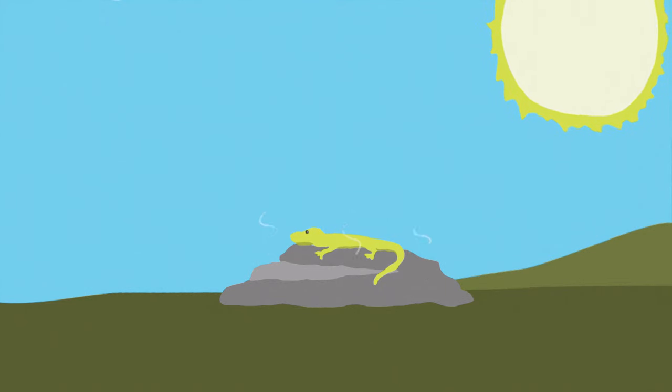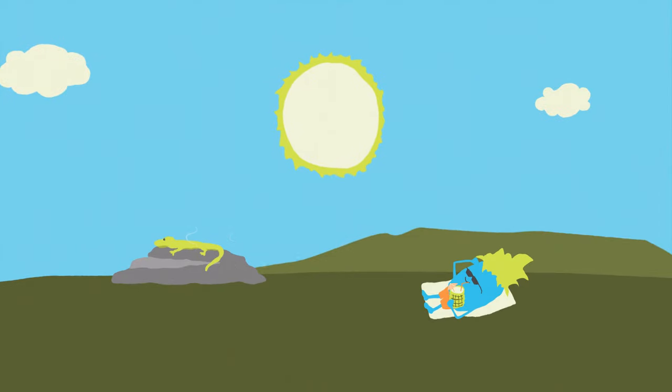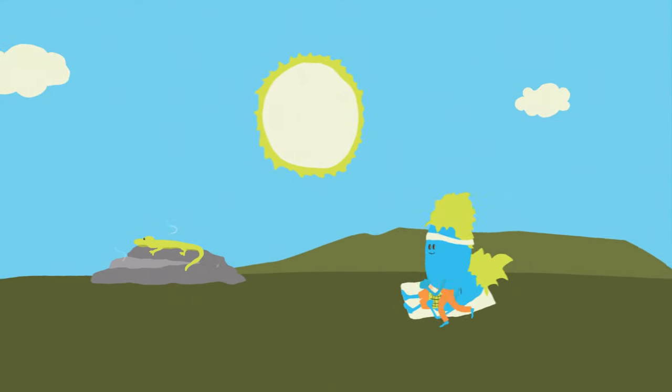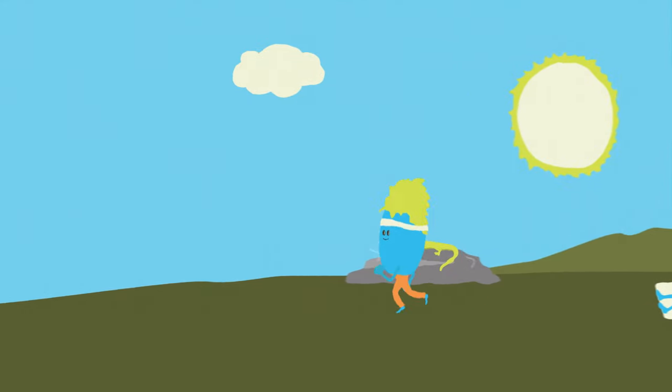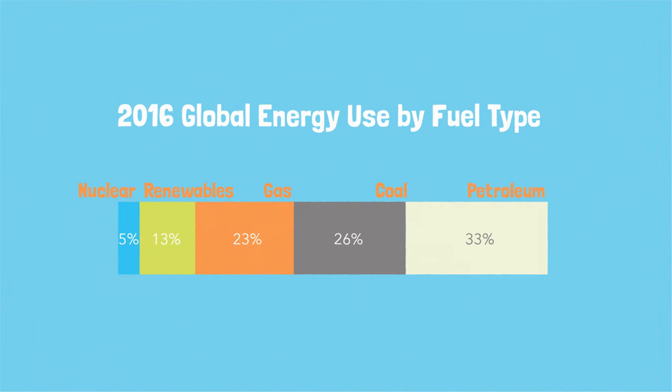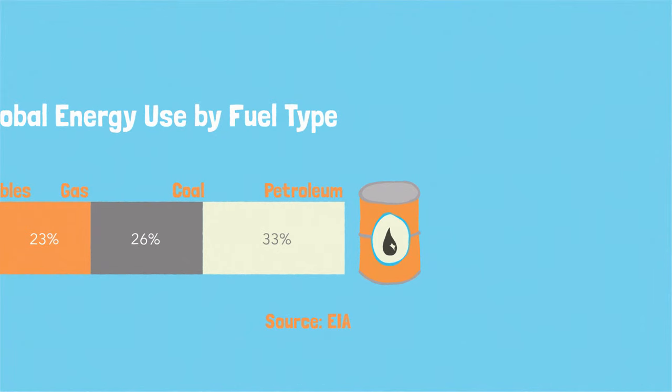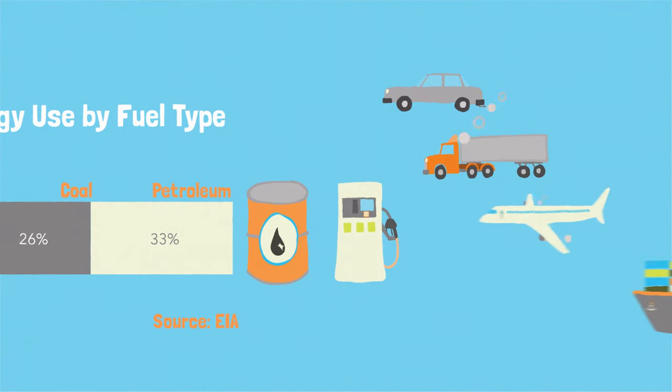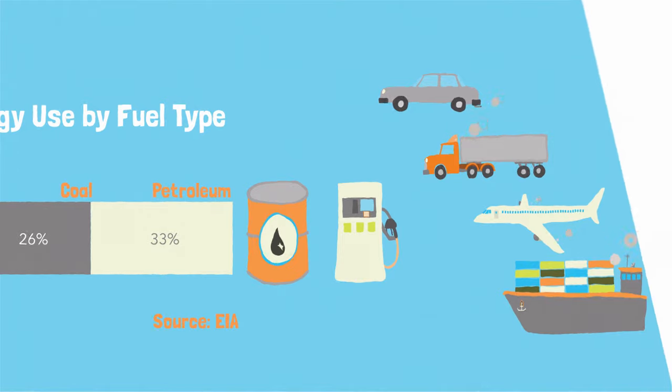Like every animal, we use energy from the sun to stay warm, and we use the chemical energy from food to fuel our bodies. Worldwide, our biggest single source of energy isn't food, though. It's petroleum. We turn a lot of it into gasoline and diesel, which we use to move ourselves and our stuff around.